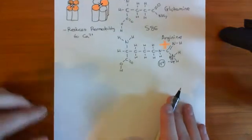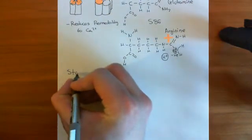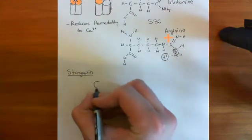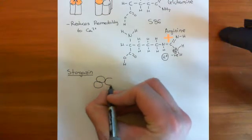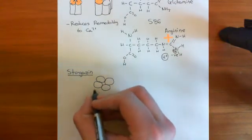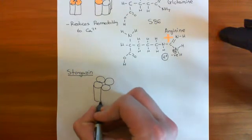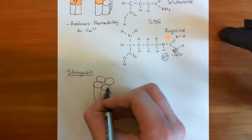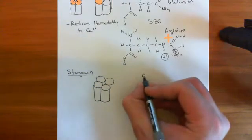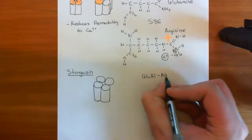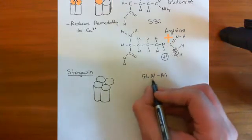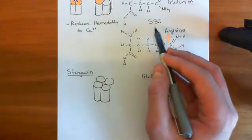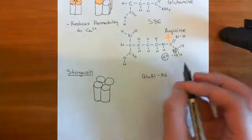So the stargazin subunit. We've discussed how the main structure of the pore-forming unit of the AMPA receptor is that you have four subunits coming together and forming a tetramer. There are four possibilities for the subunits — four genes coding for them: the GLU-A1 through GLU-A4 subunits. We've discussed how you can get variation through the flip-flop mechanism and also through glutamine to arginine editing at position 586 in GLU-A2.